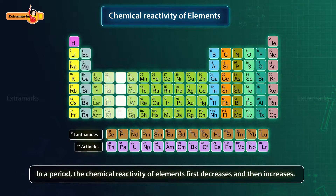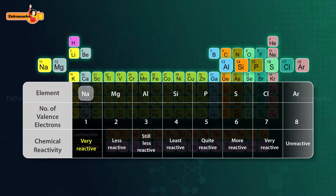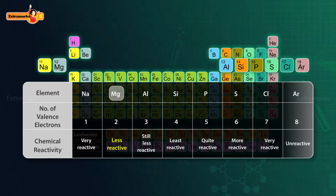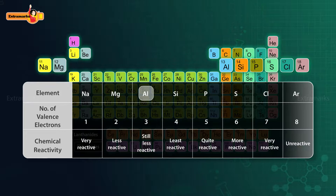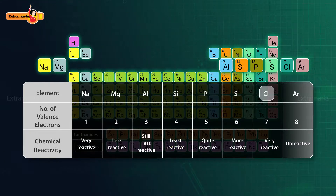As we move along a period from left to right, the chemical reactivity of elements first decreases and then increases. Consider the elements of the third period: sodium can lose electrons more easily than magnesium, and magnesium more easily than aluminium. As the tendency to lose electrons decreases, reactivity also decreases, making silicon the least reactive element in the third period. As we move from phosphorus to chlorine, the tendency to gain electrons increases, and hence reactivity again increases.